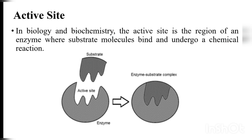What is the active site? The active site is a site on an enzyme where the substrate molecule binds and undergoes a chemical reaction. A specific enzyme has a specific active site that is complementary to the substrate on which it will act. This active site binds with the substrate to form an enzyme-substrate complex.